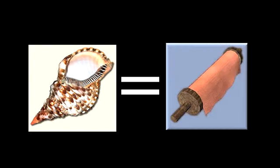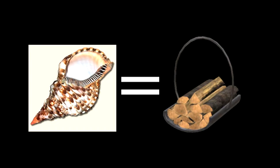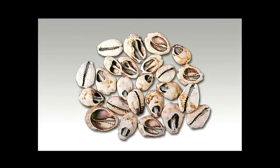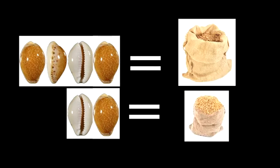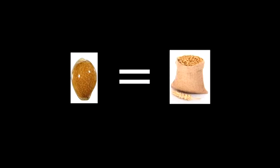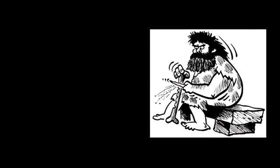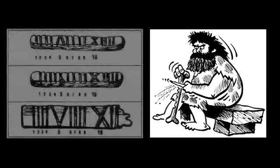For example, a big shell could represent a sack of grain, or a bolt of cloth, or a cartload of firewood. Smaller amounts could be represented by small shells. For example, eight small shells equalled one big shell, so four shells meant half a sack, two shells for a quarter, and one shell for one eighth of a sack.